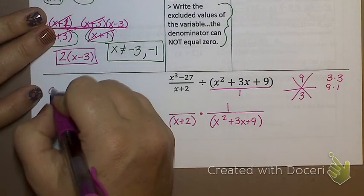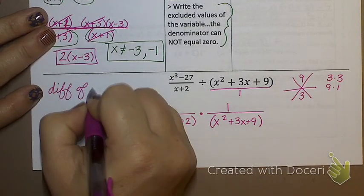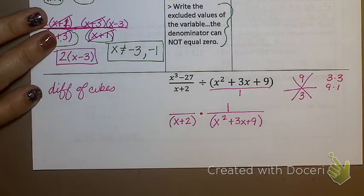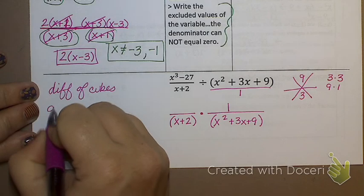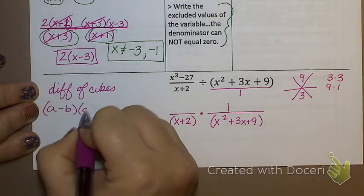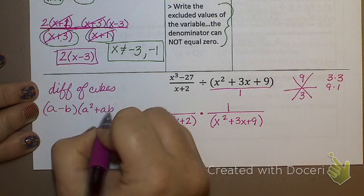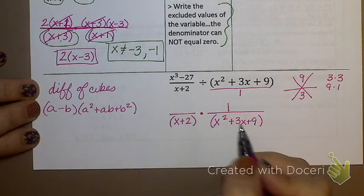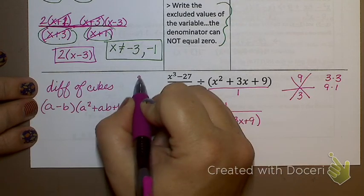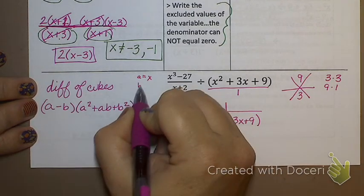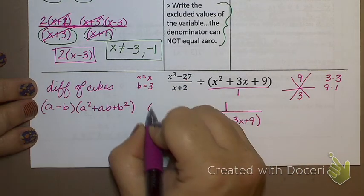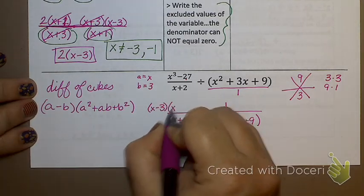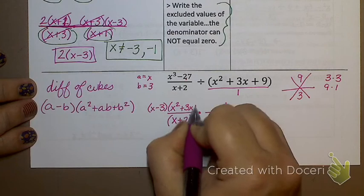Does anyone know the factoring that's going on there? Say that again? Difference of cubes. Now, that's not going to come up very often, but we wanted to show you an example where it does come up because it may. So difference of cubes, if you remember, is a minus b, a squared plus ab plus b squared. So what is a in this case? x, and what's b? 3, cube root of that. So let's see, I would have x minus 3, and then I would have x squared plus 3x plus 9.